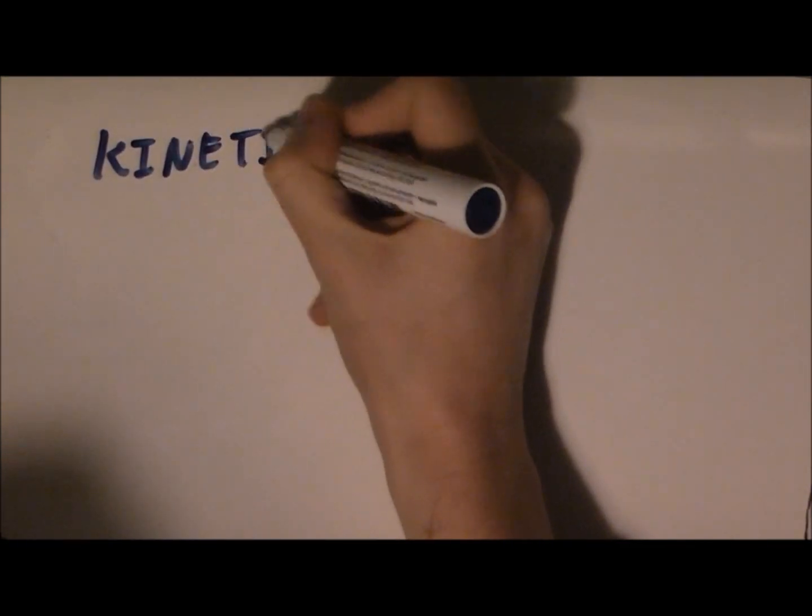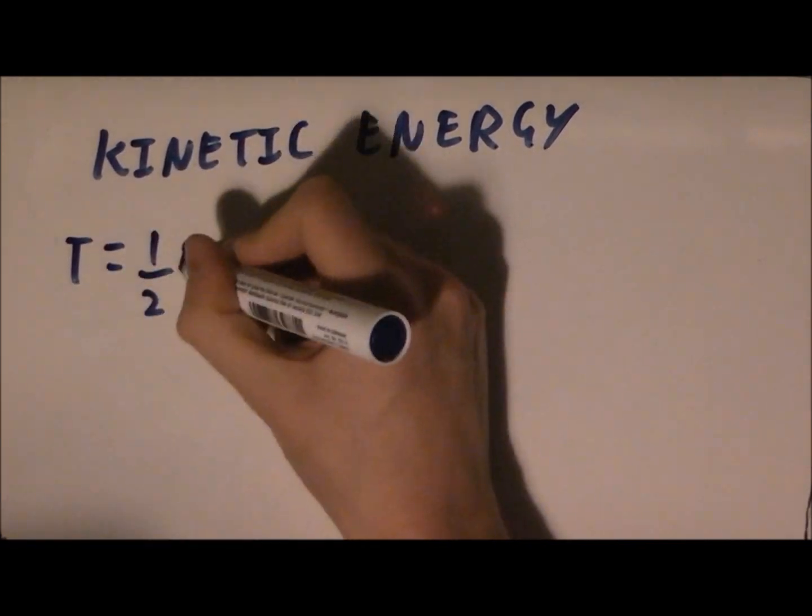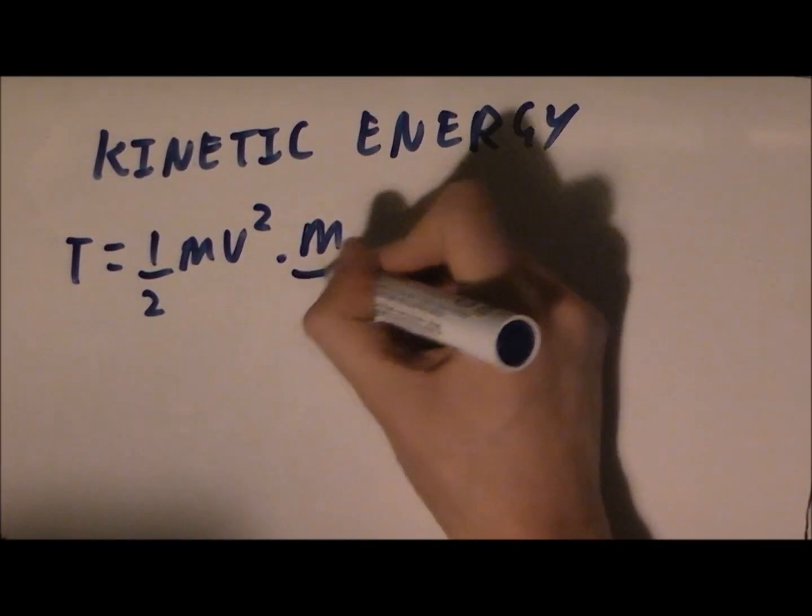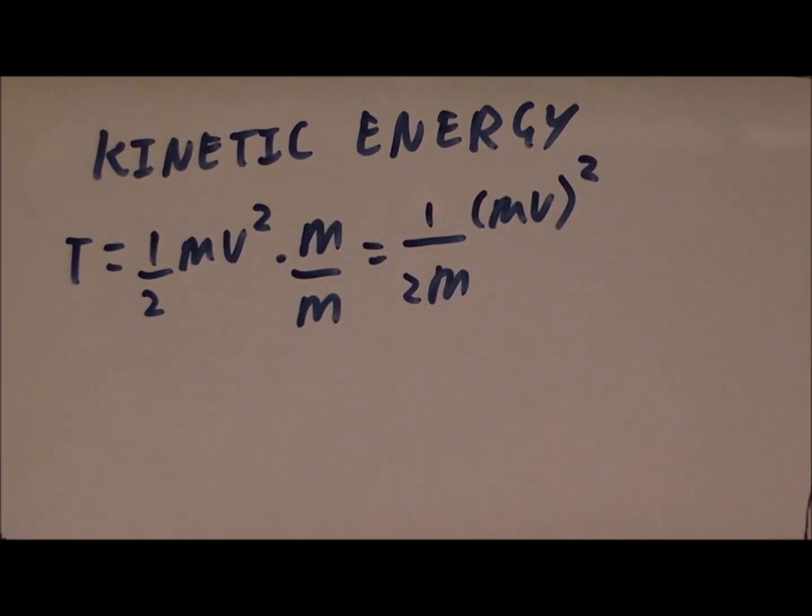Let's start with thinking about kinetic energy. We define kinetic energy as T, which is equal to half mv squared. It turns out that talking about velocity isn't very useful, so let's change this equation to depend on momentum.